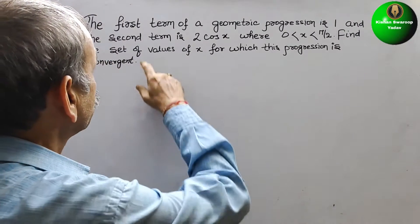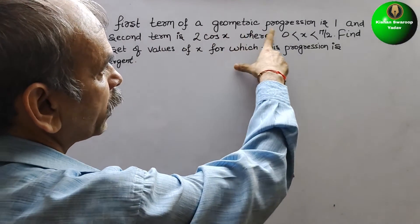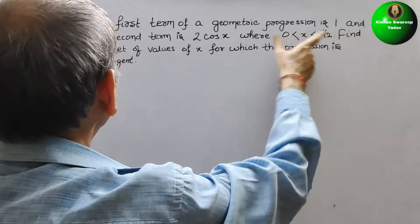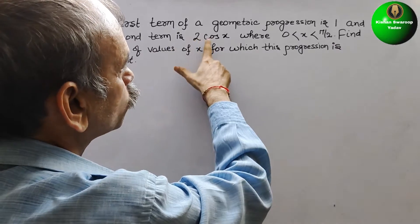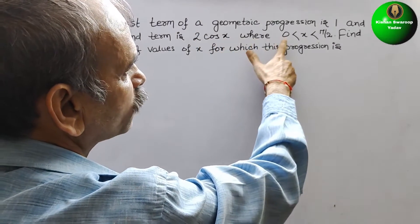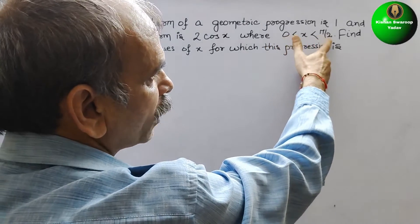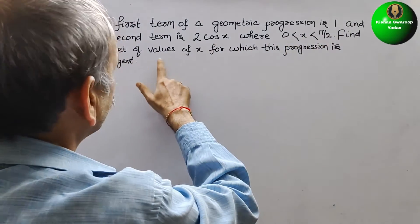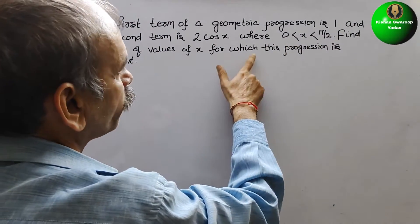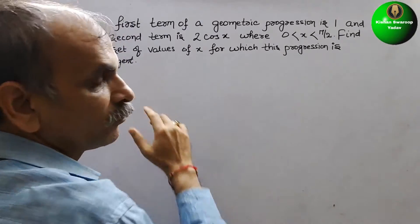Your question is: the first term of a geometric progression is 1, and the second term is 2 cos x, where 0 < x < π/2. Find the set of values of x for which this progression is convergent.